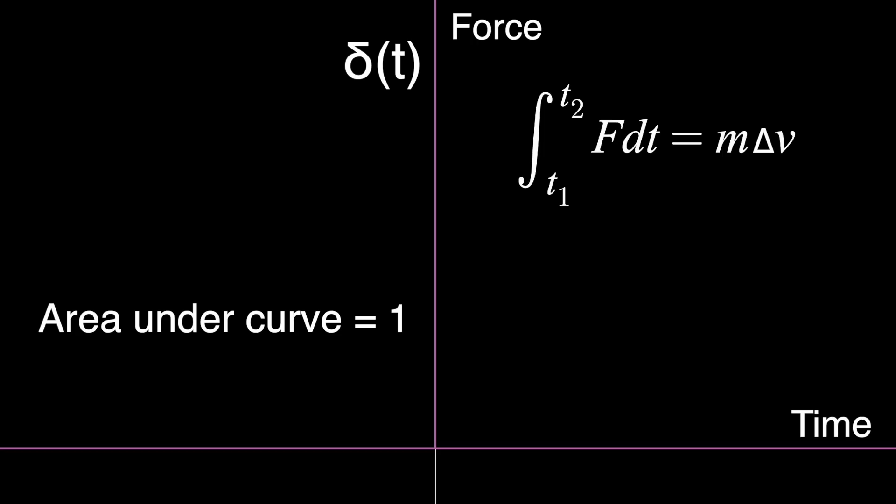If the Flash wielding Thor's hammer is the only thing applying the force, then we just need to find the area under the curve of the Dirac delta function, which is one. If the block has a mass of one kilogram and starts at rest, then the delta V and final velocity will be one meter per second.